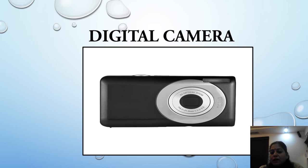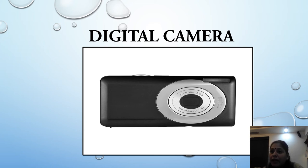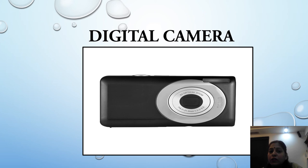The sixth input device is digital camera. A digital camera is used to take photographs and record video. Photos or videos taken by the digital camera are stored in a memory chip inside the camera. Then the digital camera is plugged into the computer and the images or video are transferred to the computer for storing, editing, and printing.